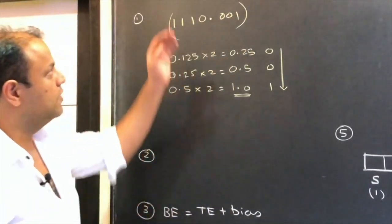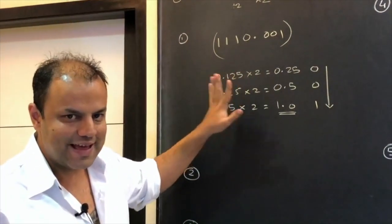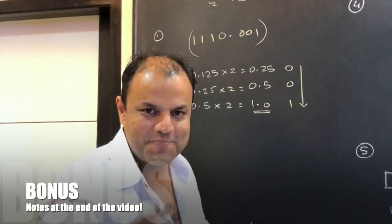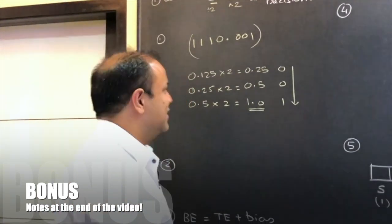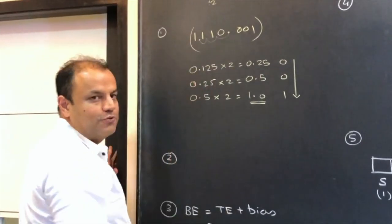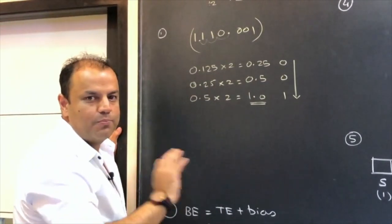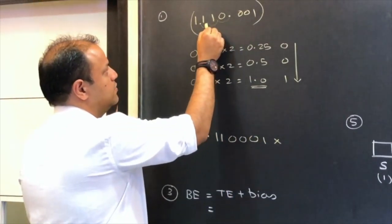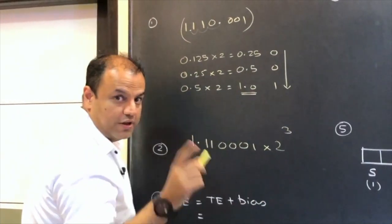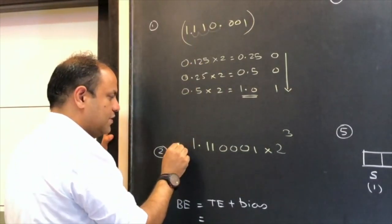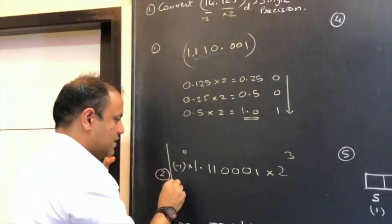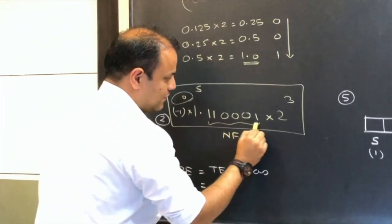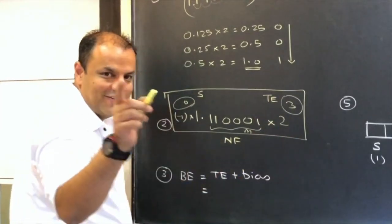So that was your first step: converting 14.125 into binary, giving 1110.001. Once you have the number in binary, second step: normalize. The rule is there should be only one non-zero digit to the left of the point. Move the point 3 places so this number becomes 1.110001 × 2³. Because the number is positive, this is (−1)⁰ × 1.110001 × 2³. This is the normalized form — the sign, the mantissa, and the true exponent.